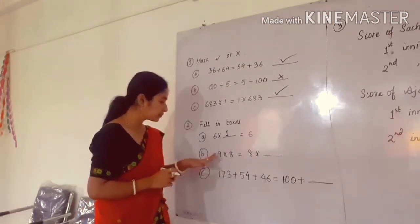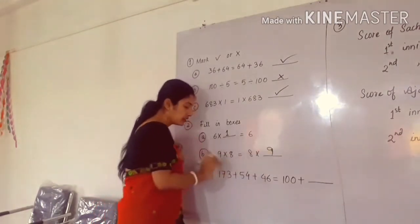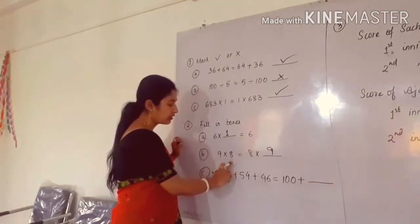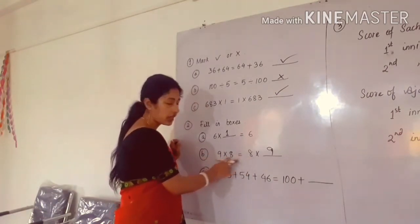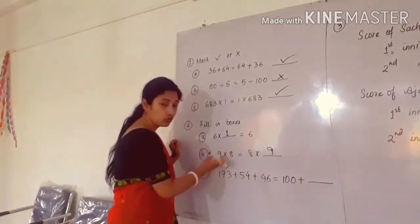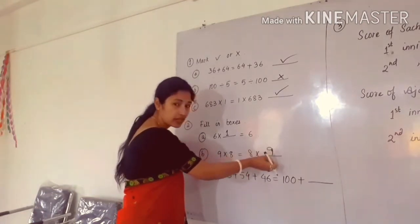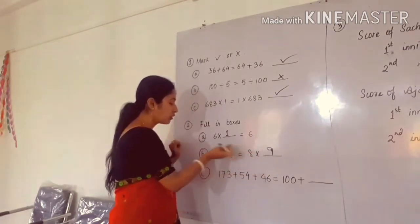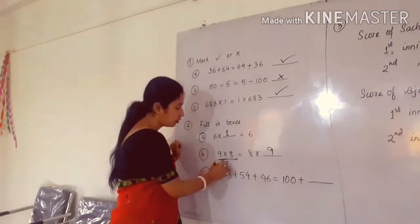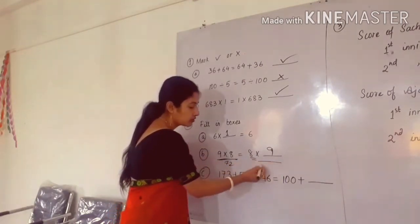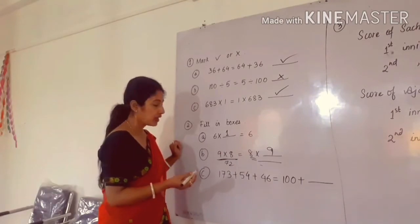Next is number B: 9 into 8 is equal to 8 into blank. Here it will be 9. In the right hand side, 8 is already present. Equal to means we have to balance the two sides — left hand side and right hand side. 9 into 8 will be 72, so which number should be multiplied to 8 to get 72 again? The answer is 9. This property is commutative property in case of multiplication.